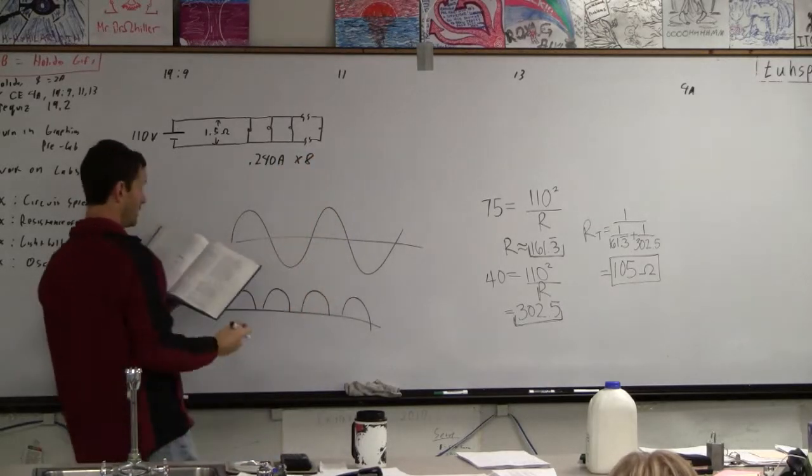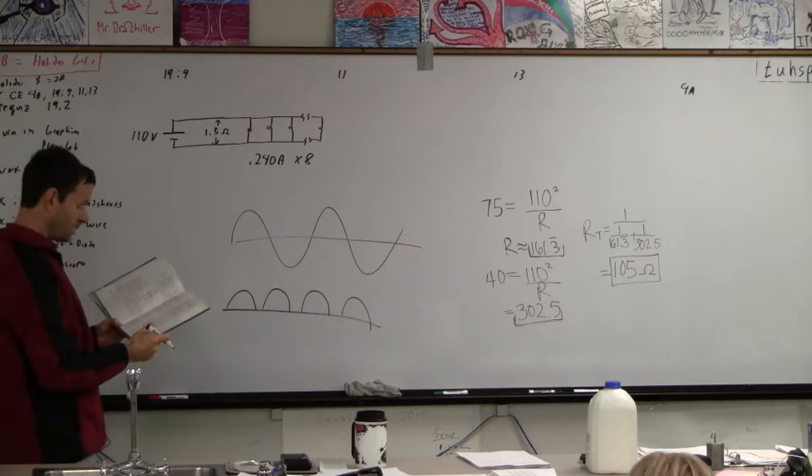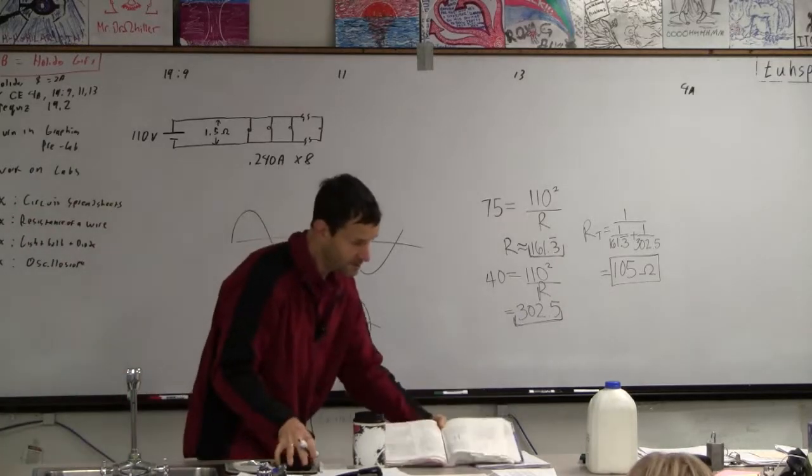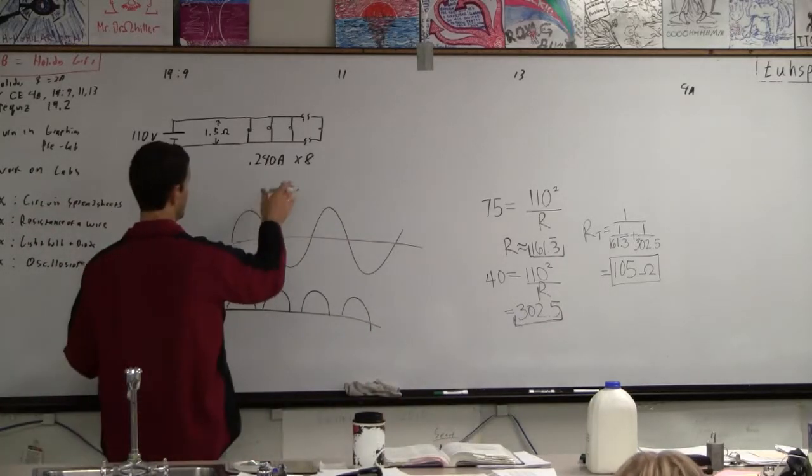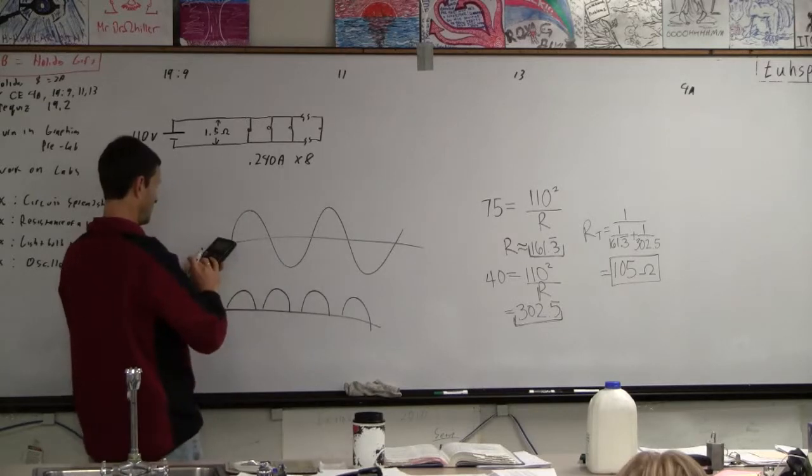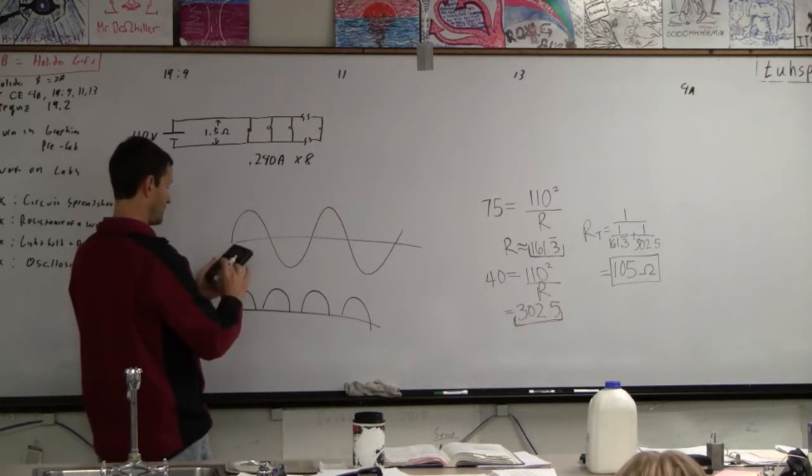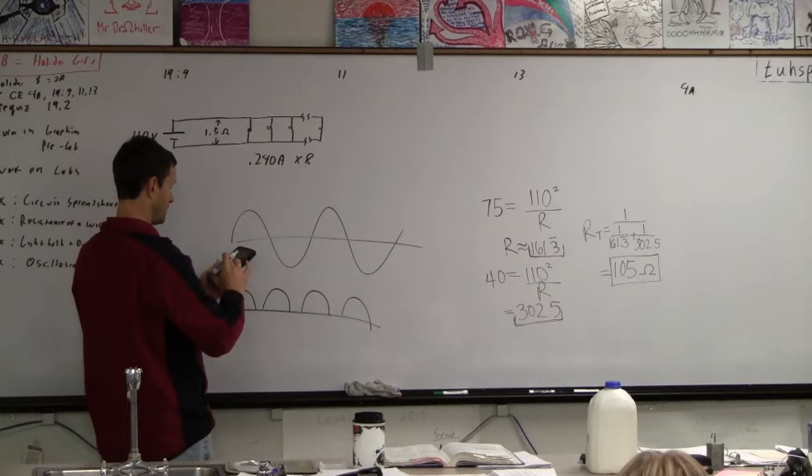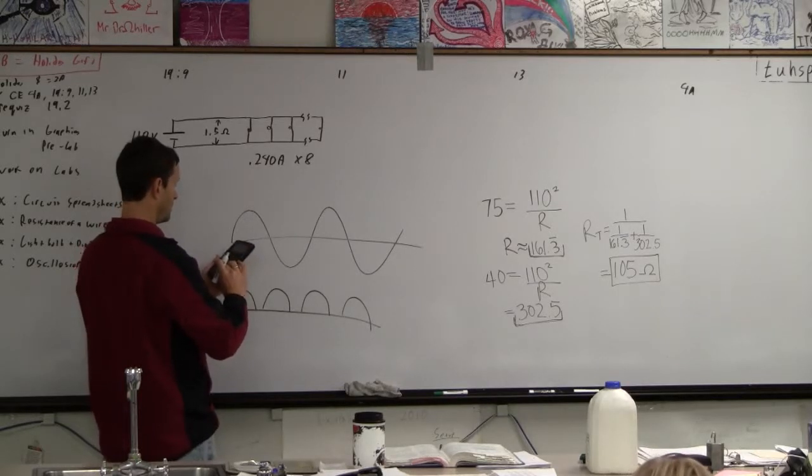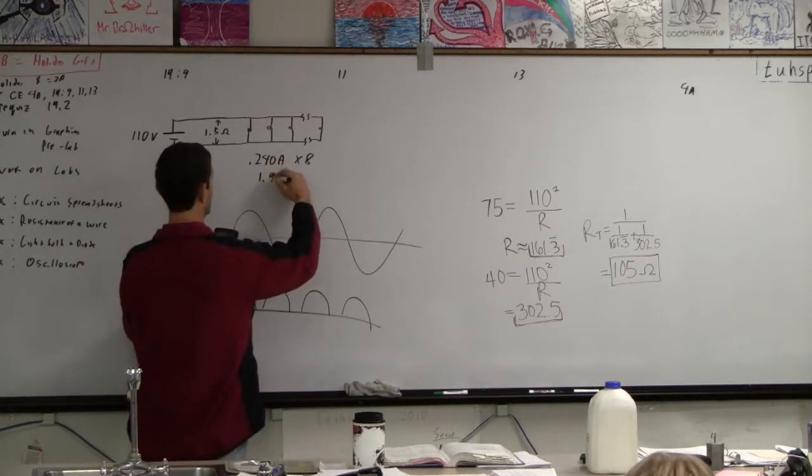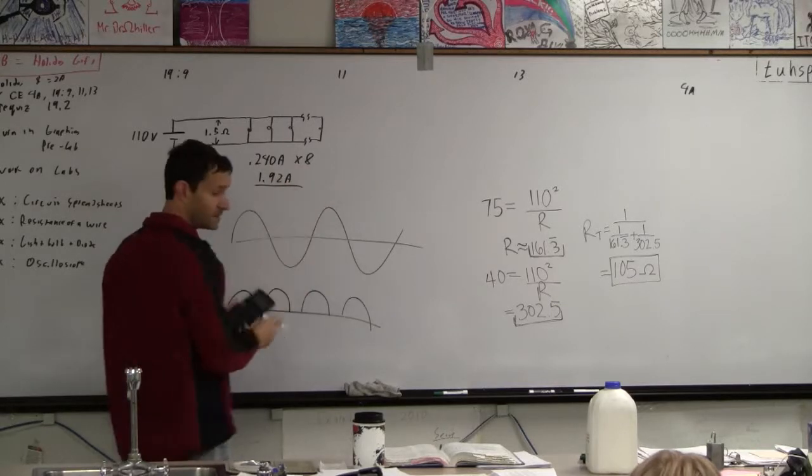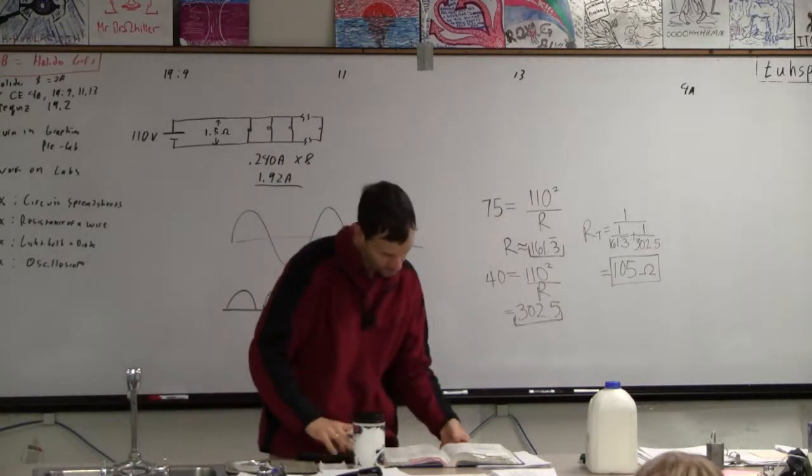And that means we can figure out that the current flowing out of the battery is 8 times that, right? So that I know for sure. So 0.24 times 8 is 1.92 amps is definitely flowing out of the battery, right?